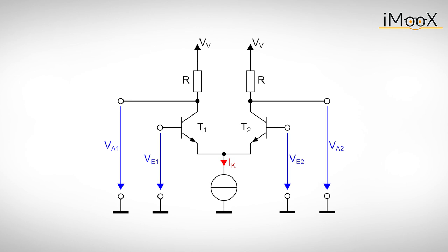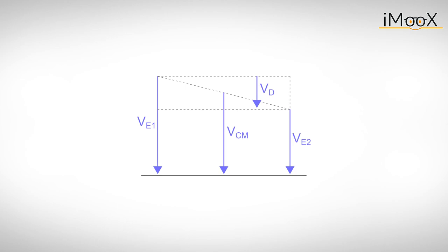In order to understand how a differential amplifier works, we could calculate the impact of the individual input voltages on each output. But there is a much more convenient way to investigate the behavior of differential amplifiers. Instead of the actual input voltages VE1 and VE2, we use a transformation to obtain the common mode and differential mode voltages VCM and VD.